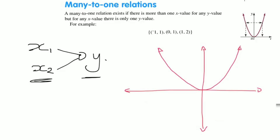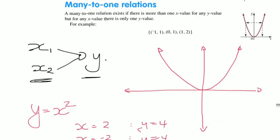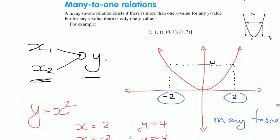Let's look at the graph of y equals x squared. If x equals 2, then y equals 4. If x equals minus 2, that also gives us y equals 4. So negative 2 and positive 2 both generate exactly the same y value. We have a many-to-one because many x values generate one y value.